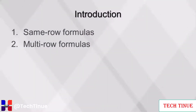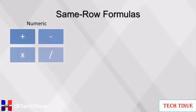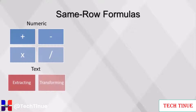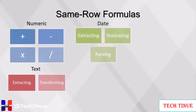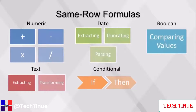This video will cover two types of formulas: same row and multi-row. A commonly used method of data preparation is using existing fields to create new variables. Examples include adding, subtracting, multiplying, dividing, or applying another mathematical function to a numeric field; extracting and transforming substrings from a text field; extracting, truncating, and parsing date parts from a date field; conditional statements using if-then and binning to create new variables; and comparing values of two different fields to create a boolean variable.